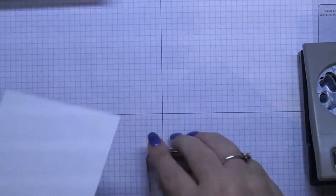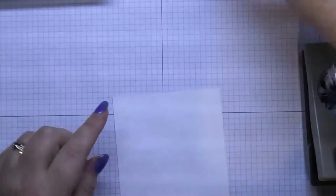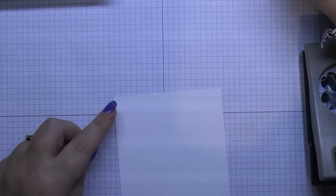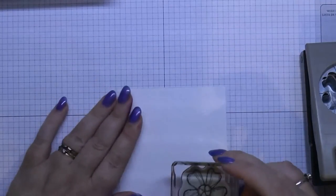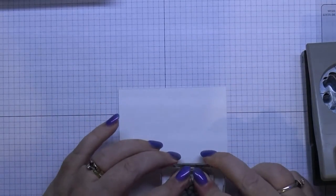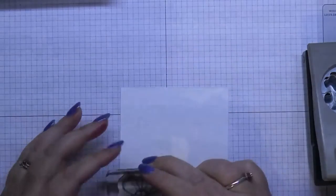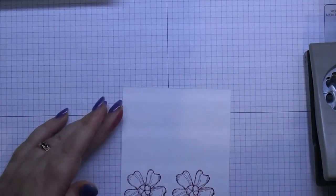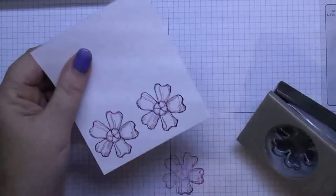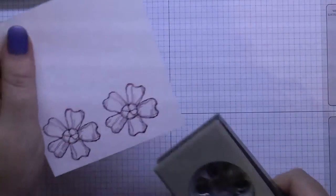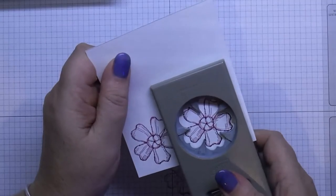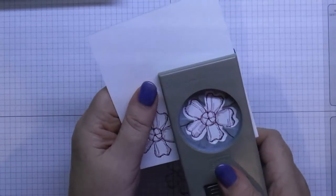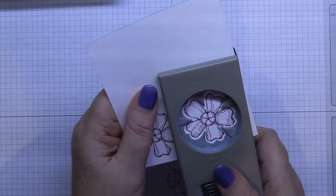And then when I go to stamp it, if I stamp with that arrow pointing towards the edge of the card... that looks so pretty in the rich razzleberry. When I go to punch that out, I have it perfectly on my cardstock every time.